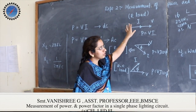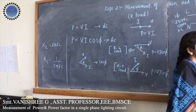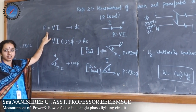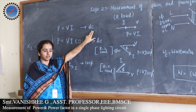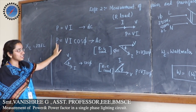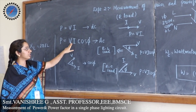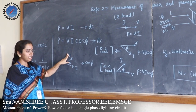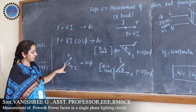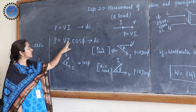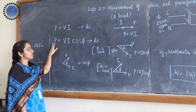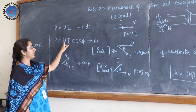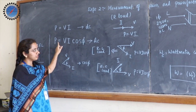The next experiment is measurement of power and power factor in a single-phase lighting circuit. We are familiar that power is given by the product of voltage and current in a DC network. But in an AC circuit, power is given by the product of voltage, current, and cosine of the angle between V and I — the applied voltage and current flowing through the network. This factor, cos phi, is called the power factor.